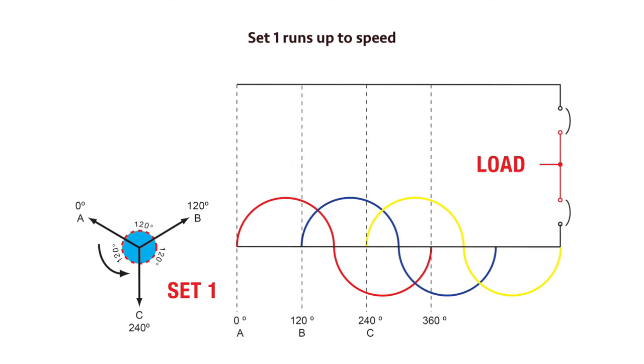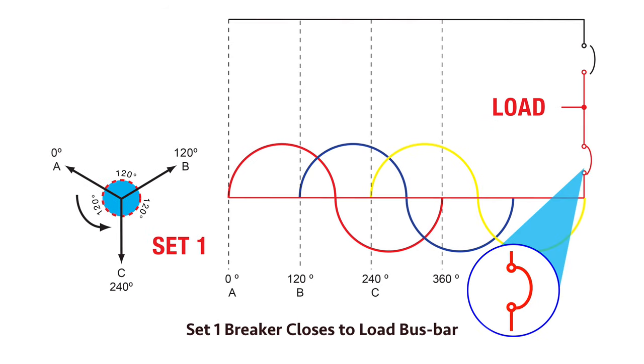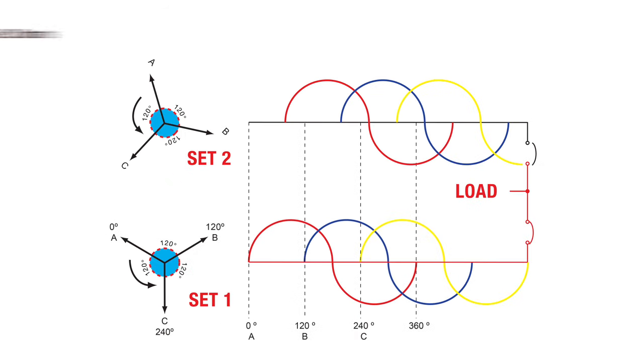Set one runs up to speed and its voltage and frequency will be the reference to synchronize with set two. After run up, set one's breaker closes to the bus. Set two runs up to speed with a breaker open.